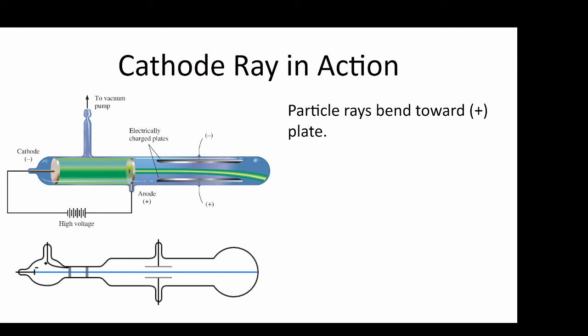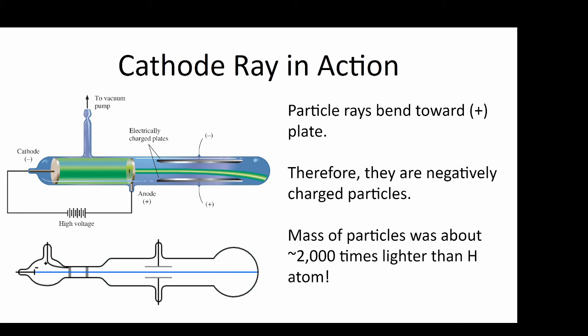Thompson noticed that the beam always deflects toward the positive plate and away from the negative. Therefore, the particles in the beam must be negatively charged. Thompson measured the deflection of the beam as a function of the voltage of the plates to determine the mass of the deflected particle. At the time, the lightest known particle was hydrogen, but Thompson found that the beam was about 2,000 times lighter than a hydrogen.